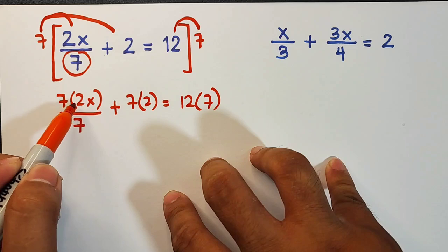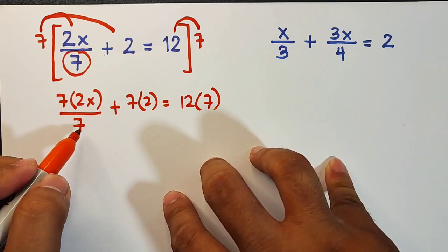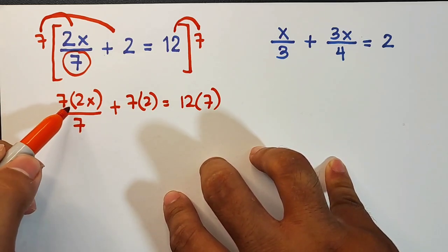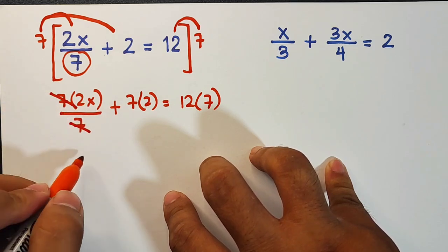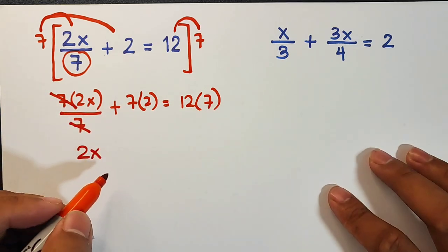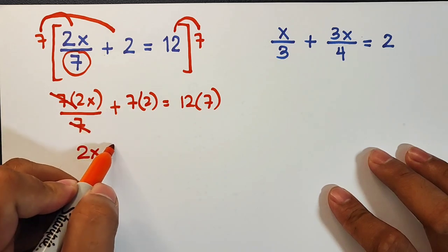Cancel out 7 and 7—what will remain here is 2x. And for this part, this one is plus 14.